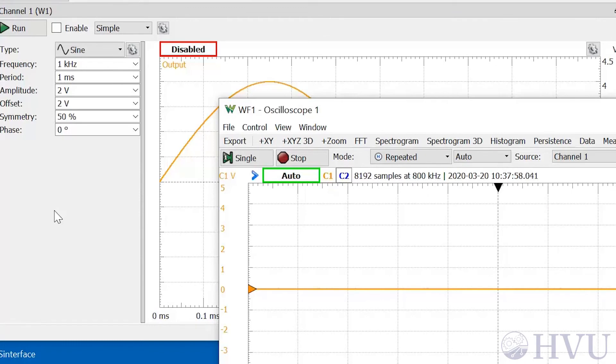Right now, the wave gen instrument is off, and the scope is showing the voltage as being zero.